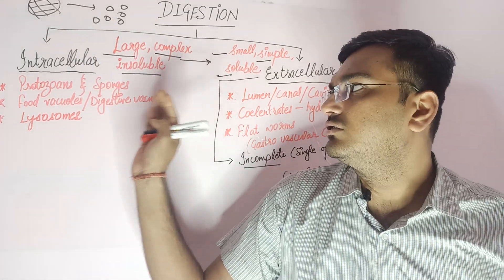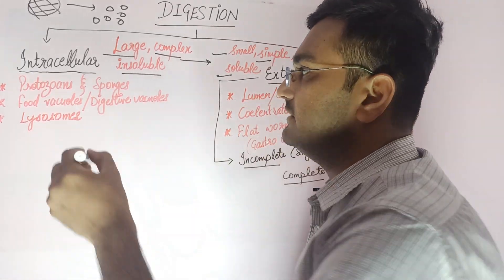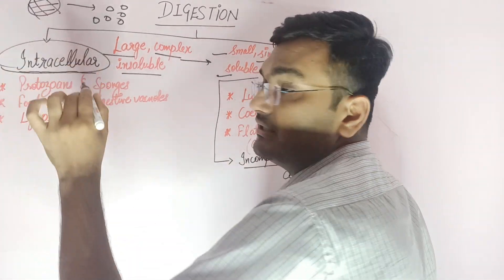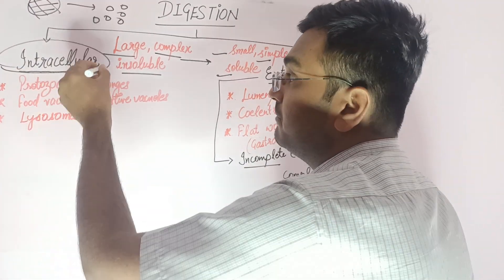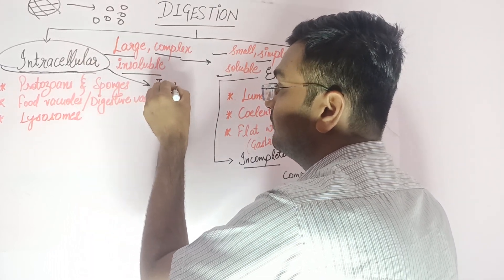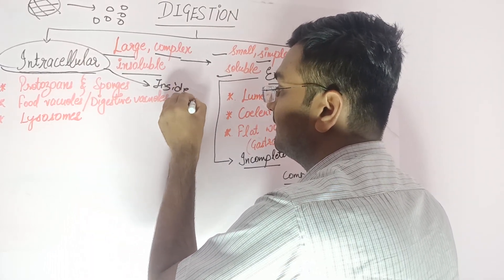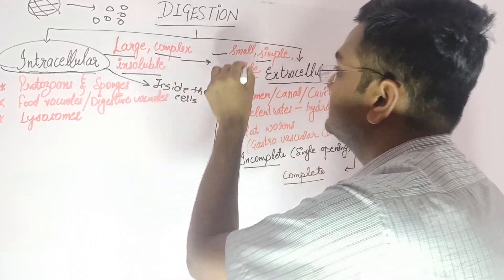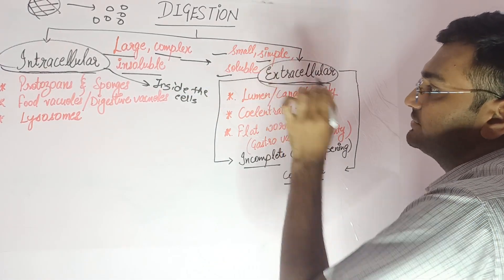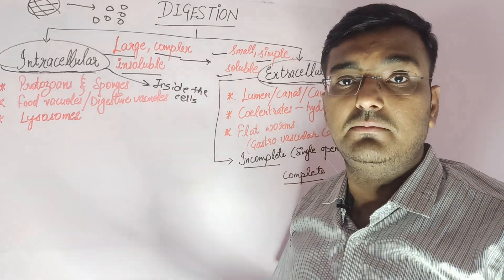Now, digestion is of two types. As the name suggests, one is intracellular digestion, which means it takes place inside the cell. The second is extracellular digestion, which means it takes place outside the cell.